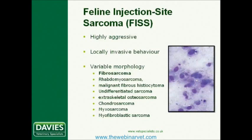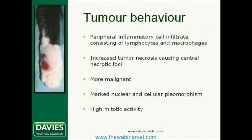Histologically, they can have a very variable morphology — there are many different types of sarcomas we can see — but fibrosarcoma is by far the most common associated with vaccination. Despite their variable morphology, they all contain certain histological features consistent across all types of injection site sarcomas. They're characterised primarily by a prominent perilesional lymphocytic reaction and large necrotic areas. The latter is often considered a criterion of malignancy in many grading systems, which is why injection site sarcomas tend to be graded higher. They also exhibit marked nuclear and cellular pleomorphism, high mitotic activity, and increased tumour necrosis.